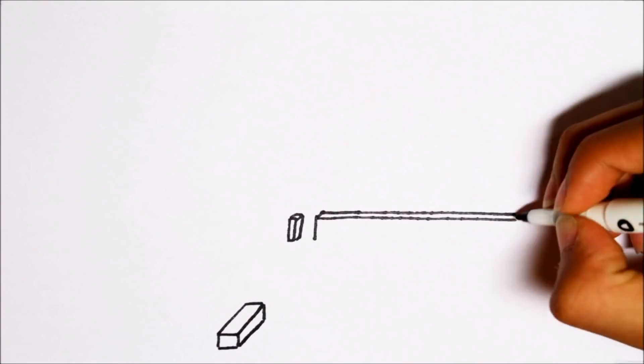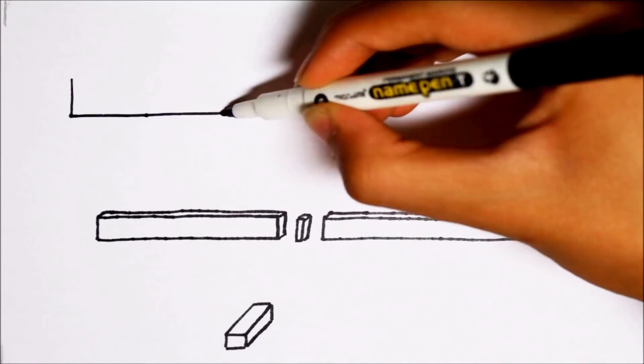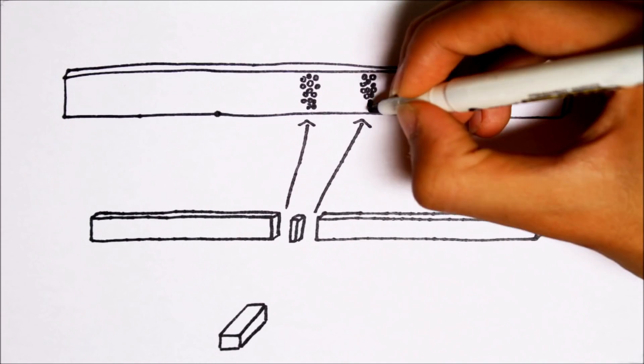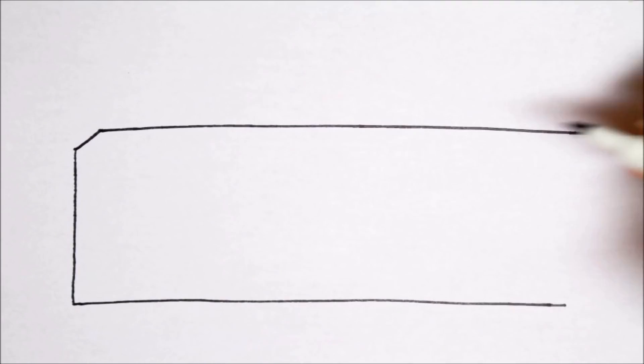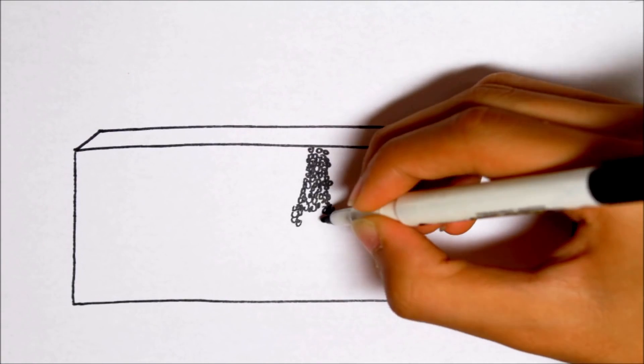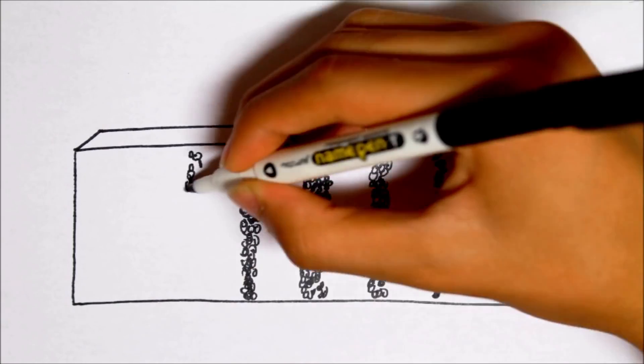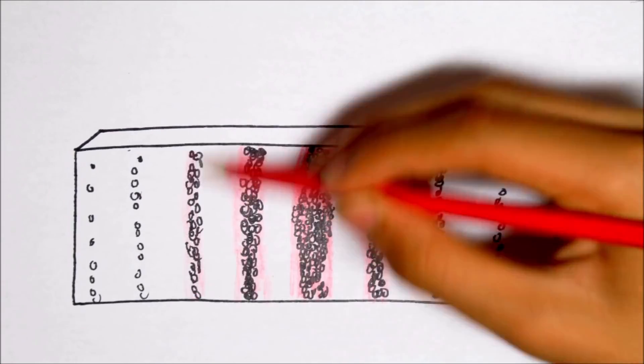You would expect the experiment results to look something like this, because the particles would most likely land right behind the two slits, right? Instead, they looked like this. How in the world did the particles arrive right between the two slits, and what's that weird stripy pattern?